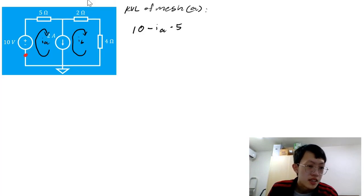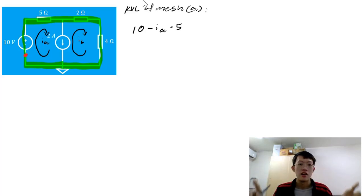But, notice that in this example, this current source is between this mesh here and this mesh here. And remember that I couldn't continue writing the KVL equation as I passed through this current source. So, the way I would have to identify my supermesh would be to literally go around the current source.